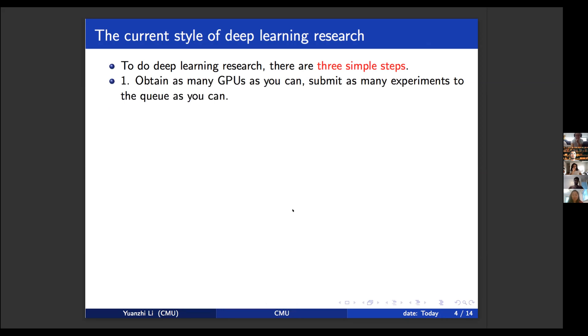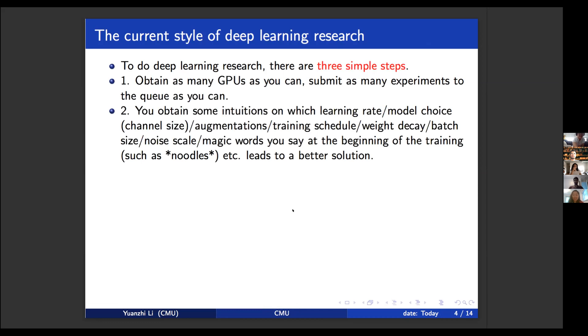So typically for deep learning research, the first step is you basically want to obtain as many GPUs as you can. And then you submit as many experiments to the queue as you can. And after that, you obtain some intuition on which learning rate or model choice, augmentation, training schedule, weight decay, batch size, noise schedule, or even the magic word that you say at the beginning of the training that gives you a better solution. So you'll have some intuition and now you'll try to redesign your experiments following the intuition collected from two.